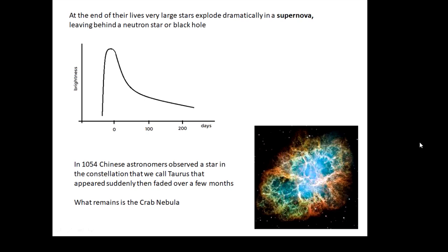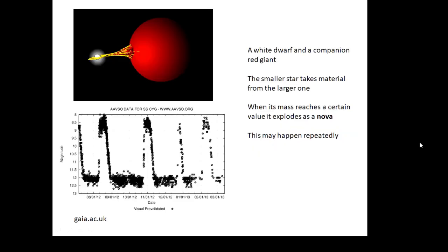Another type of explosion is a nova. Now, a nova is not as big as a supernova. You've got two stars: one of them is a white dwarf and the other one is a red giant. What happens is that the gravity of the white dwarf is gobbling up material from the red giant. The white dwarf gets heavier and heavier, and when its mass reaches a certain value,